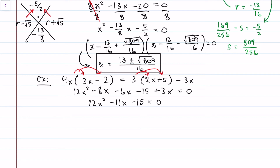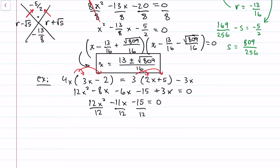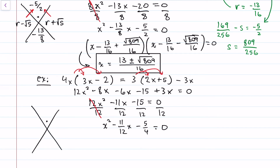Now, what two numbers multiply to the product of 12 and negative 15 and add to negative 11? None work with integers. Since there's a leading coefficient of 12, we divide everything by 12. The last term -15/12 reduces to -5/4. So we have x² - (11/12)x - (5/4) = 0. We need two numbers that multiply to -5/4 and add to -11/12.